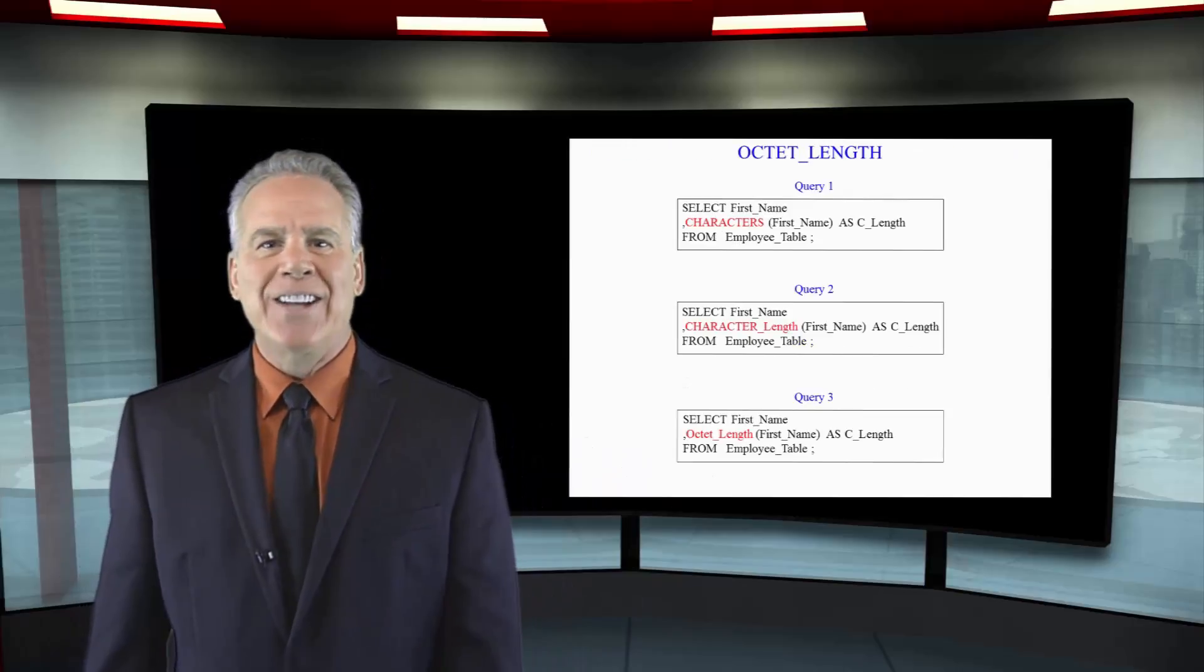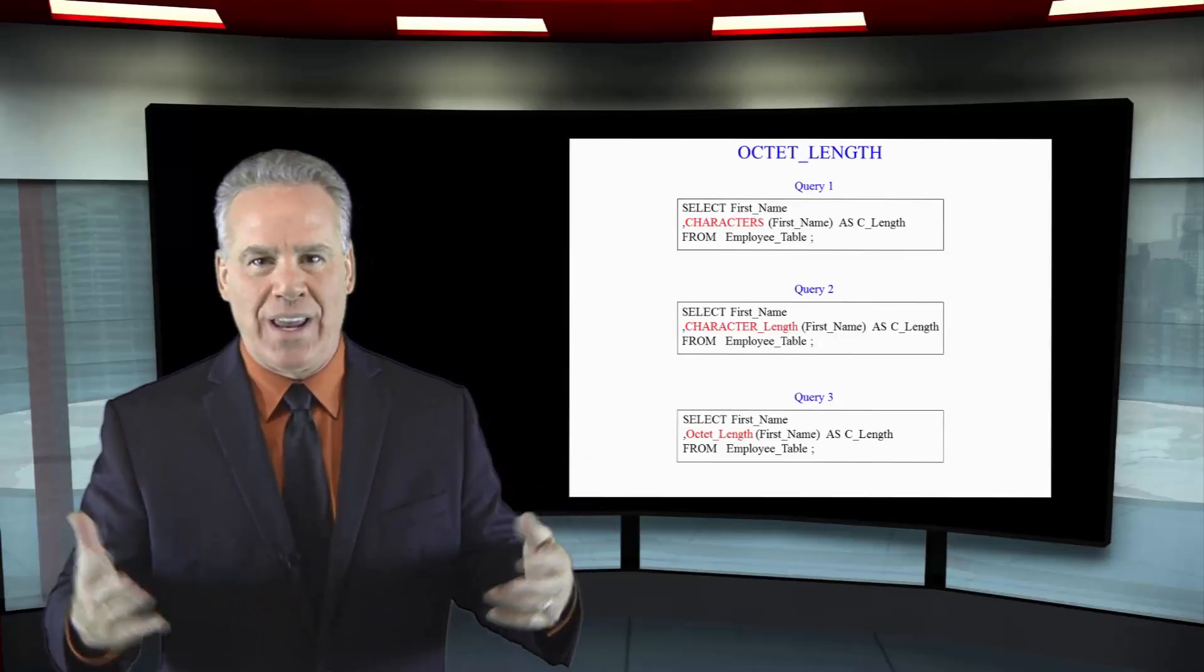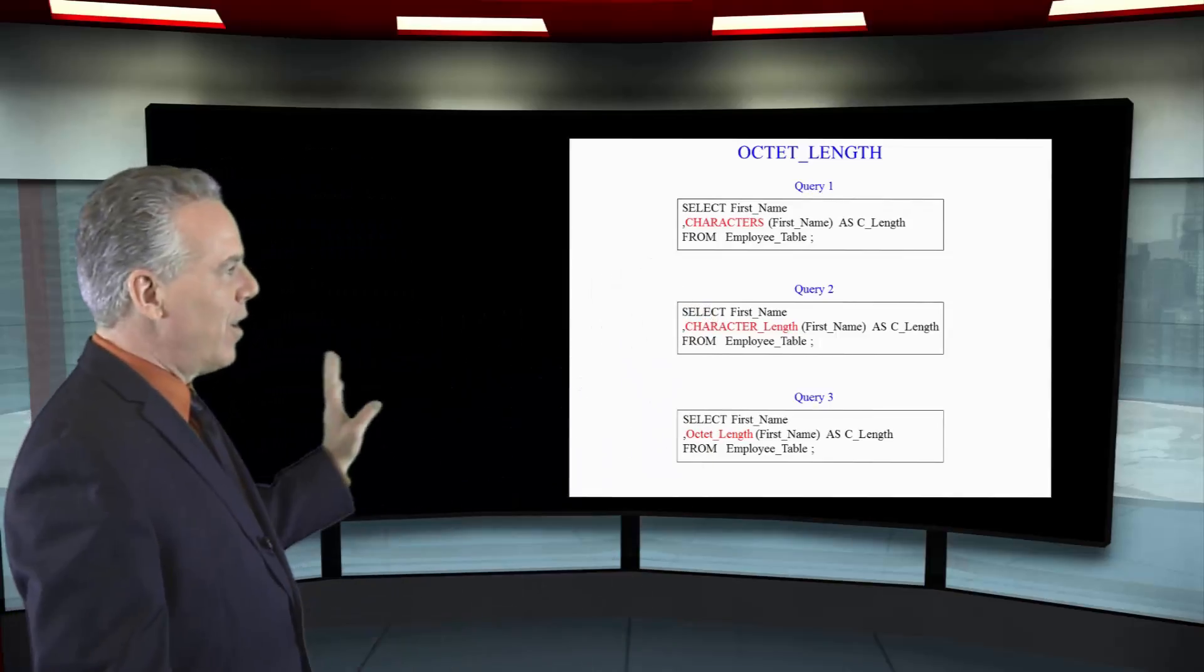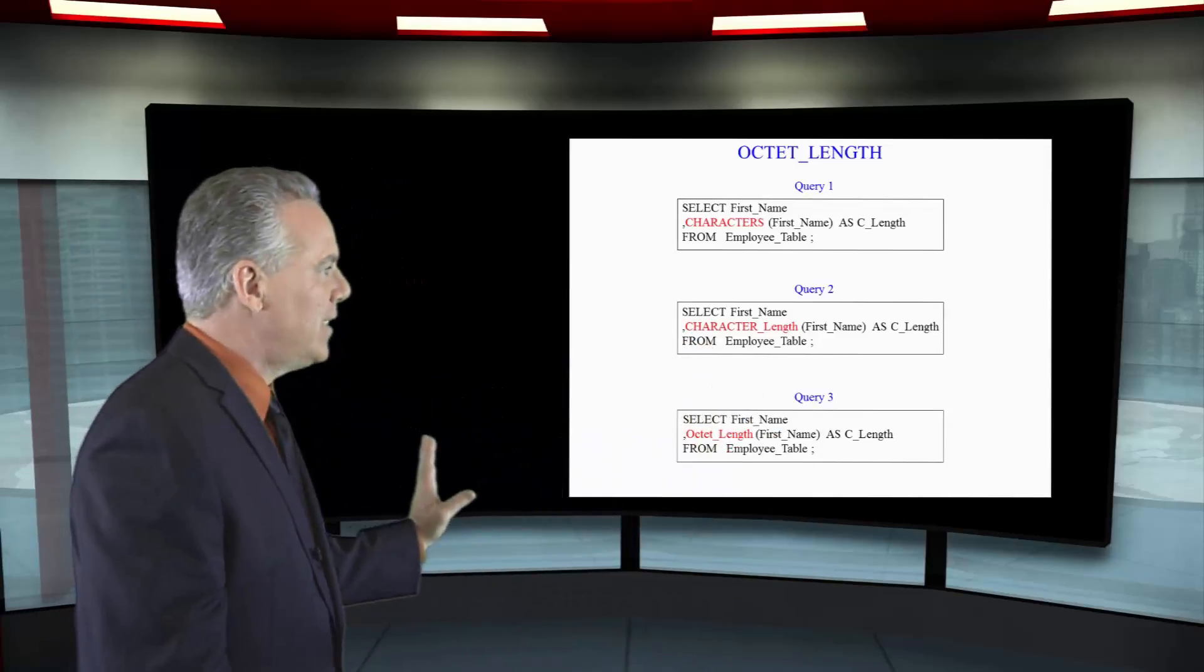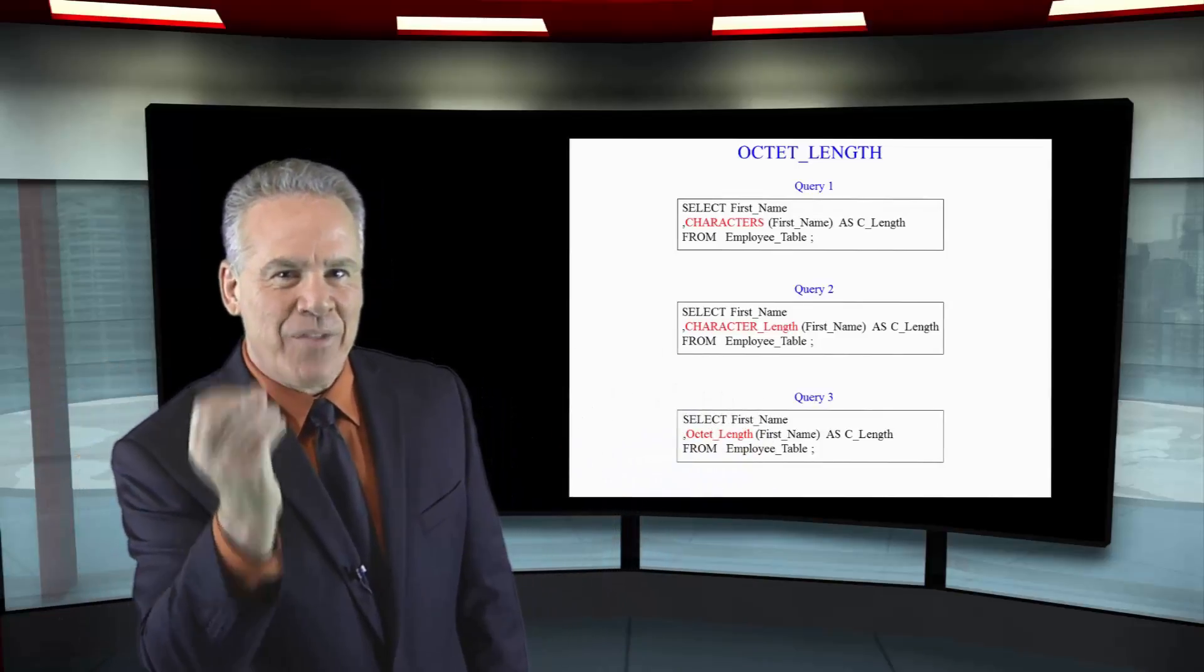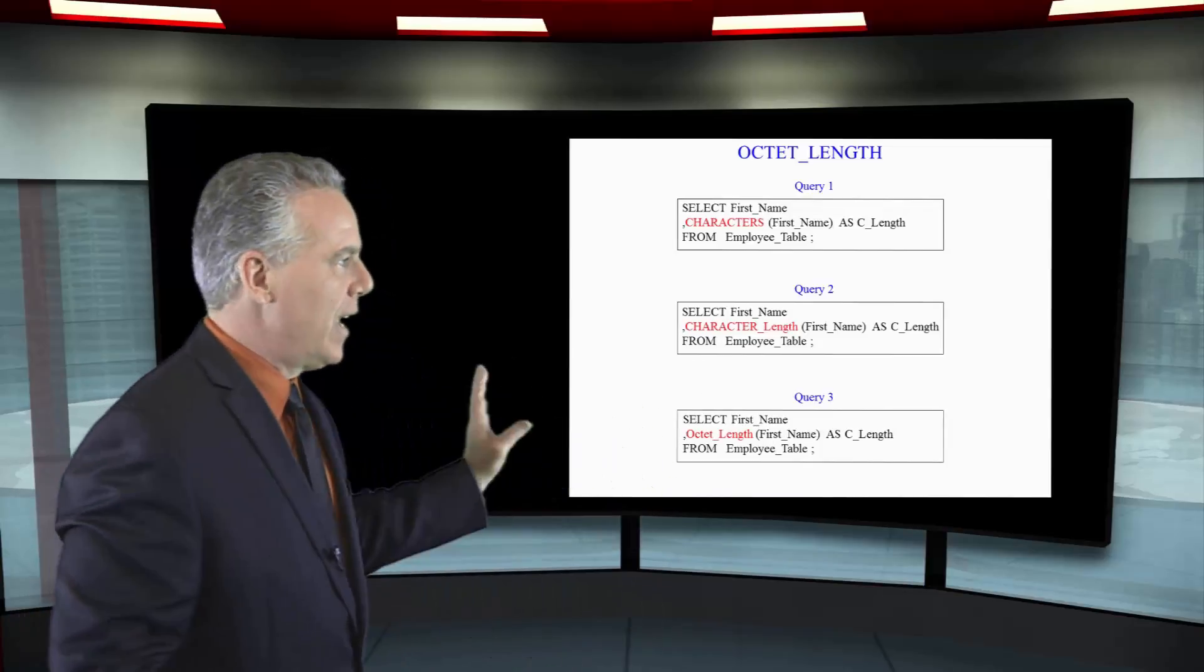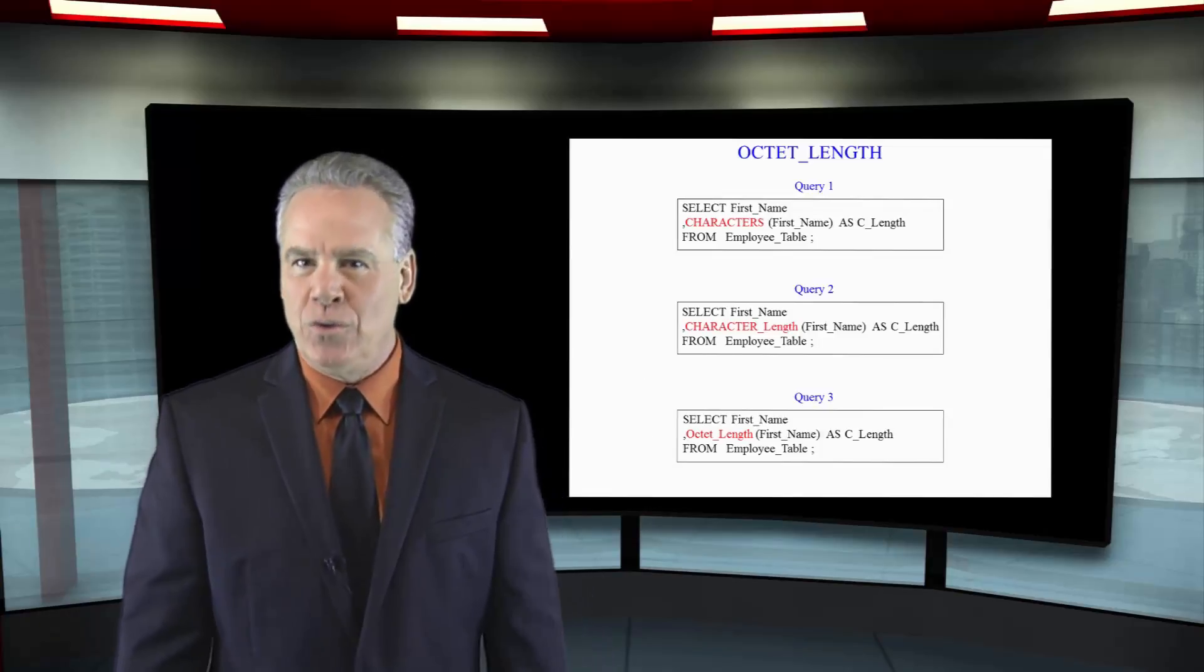You could actually see the counting of characters in a VARCHAR field three different ways. CHARACTERS is the top example. CHARACTER_LENGTH is the next one. And then the last one, OCTET_LENGTH. They all have the same performance. They all do the exact same thing. They are equivalent. Except the last two, CHARACTER_LENGTH and OCTET_LENGTH. Those are ANSI. Use those if you can.